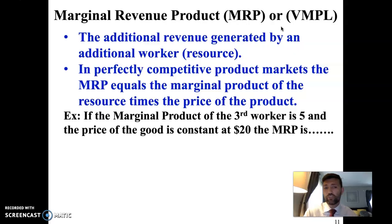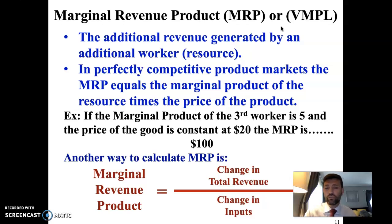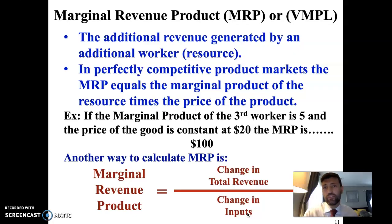So if the marginal product of a third worker is five units and the price of the good is constant at $20, the marginal revenue product is $100. Another way to calculate marginal revenue product is the change in total revenue divided by the change in inputs. Watch out — often the change in inputs is one, but if a firm went from two workers to four workers and total revenue changed by $500, you would need to divide $500 by two to find the marginal revenue product for each of those two workers.